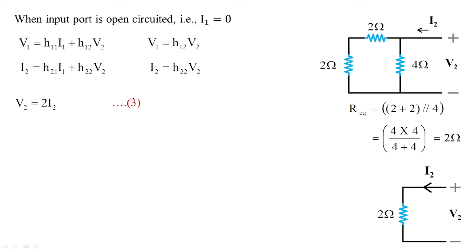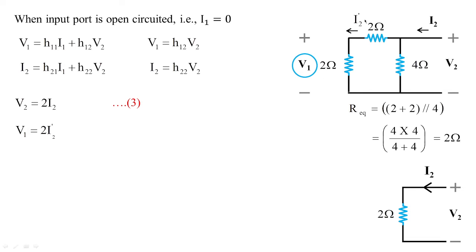We also need the value of v1 in terms of i2. v1 is the voltage across 2 ohms, so we need the current i2' flowing through those series 2-ohm resistors. This gives v1 = 2·i2'.